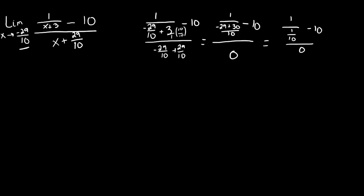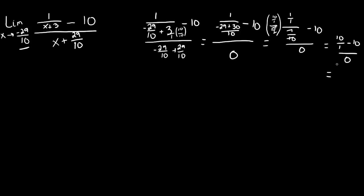Now what we're going to do is rewrite that 1 in the numerator as 1 over 1 to signify that we have a fraction over a fraction. The reason we do that is we're going to combine these into one fraction by multiplying by the reciprocal of the bottom — keep, flip, multiply, a lot of names for this trick. So we do this multiplication: 10 times 1 is just 10, and 1 times 1 on the bottom is just 1. So we have 10 minus 10 over 0, or 0 over 0, which is one of the most classic indeterminate forms we can arrive at.